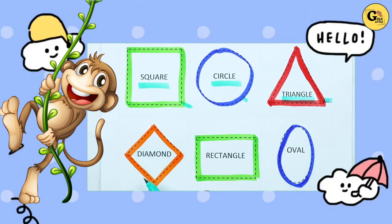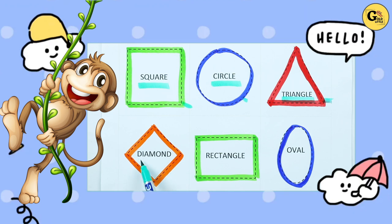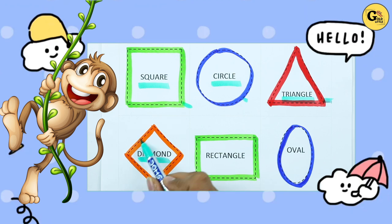Which shape is this? Diamond. D-I-A-M-O-N-D. It's a diamond with orange color.